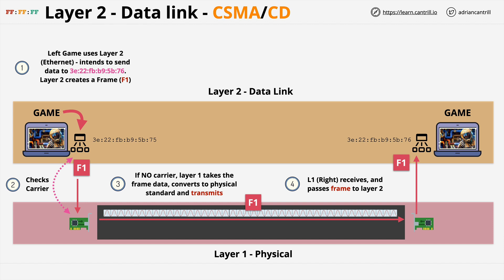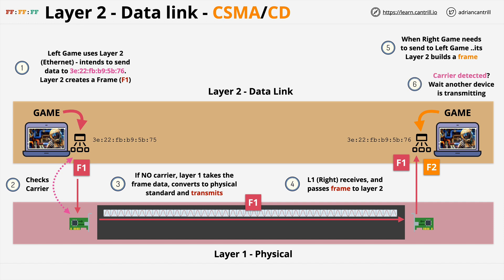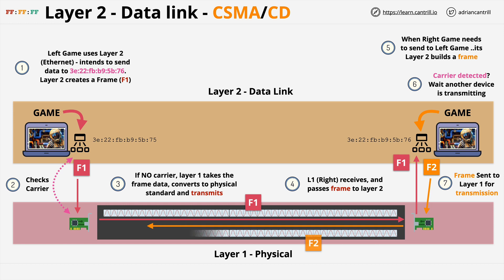Layer two uses layer one to transmit and receive the raw data, but it adds MAC addresses on top of this, which allow for machine-to-machine communication. It's also adding media access control. If at the same time the left machine was transmitting, the machine on the right attempted to do the same — layer two works with layer one and checks for a carrier on the shared physical medium. If the left machine is transmitting, the carrier is detected, and layer two on the right simply waits until the carrier is not detected. Layer one on its own would simply transmit and cause a collision, but layer two checks for any carrier before it instructs layer one to transmit. When the carrier isn't detected anymore, layer two sends the frame down to layer one for transmission. Layer one just sees it as data to send, and it transmits it across the physical medium.